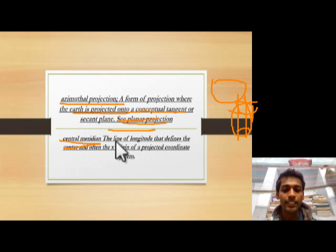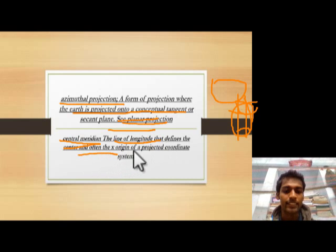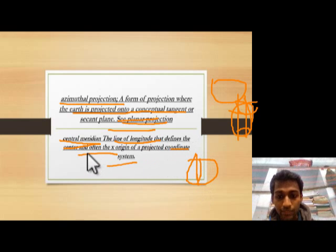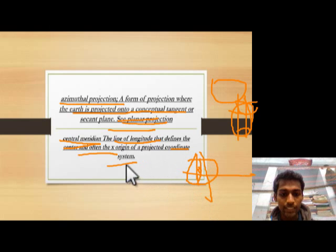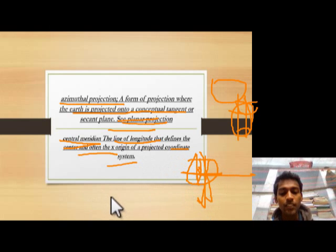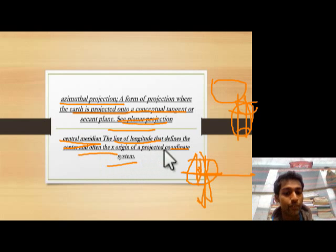Central meridian: it is the line of longitude that defines the center and often the origin of the x-axis of a projected coordinate system. The central meridian defines the center and the x-axis origin of a projected coordinate system.